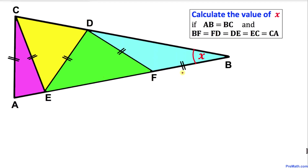Welcome to PreMath. In this video tutorial we have blue, green, yellow and purple triangles within a bigger triangle ABC as you can see in this figure. The side length AB of this bigger triangle is equal to side length BC, and furthermore the line segments BF, FD, DE, EC and CA are equal in length. We are asked to calculate the value of angle X.